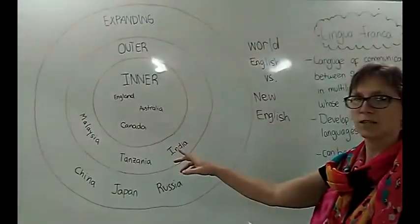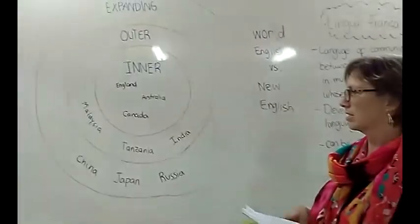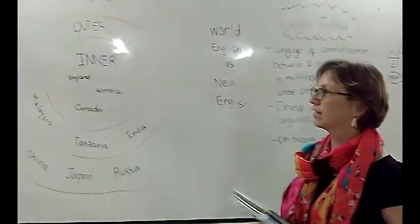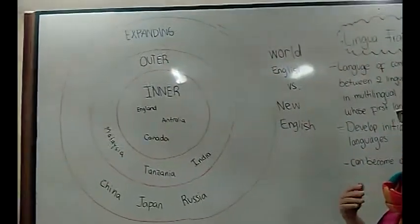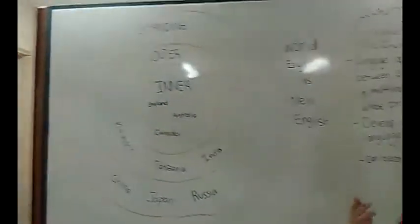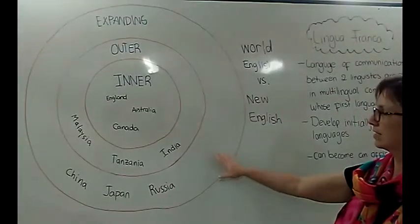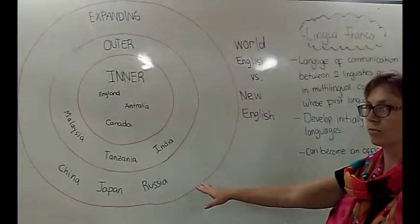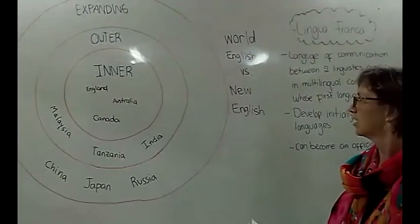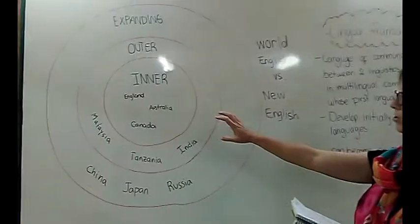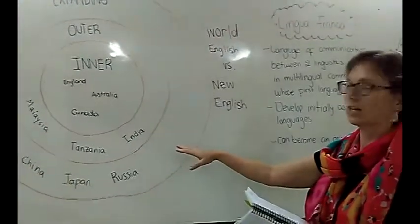Then we have the outer circle, countries like Malaysia, Tanzania, or India, which are multilingual countries with many different languages. India has over 200 languages, but they all have English as a language in common, and often they mix English with their own language. So we have, for example, Spanglish or Singlish, which is Singapore English, and many other languages that have English mixed in. And then we have the expanding circle, which is China, Japan, and Russia, which are also implementing more and more English, mixing it with their own languages. So World English would be the whole thing but mainly the inner circle, and New English would be the outer and expanding circle, where languages mix English with their own language.